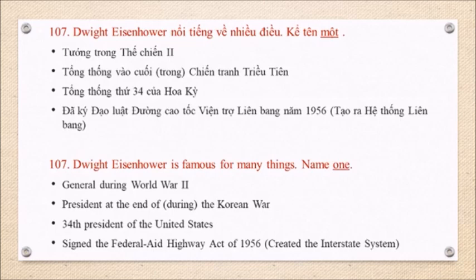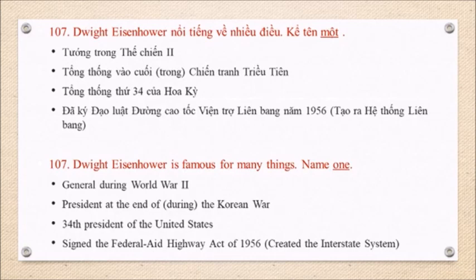Question 107: Dwight Eisenhower is famous for many things. Name one. General during World War II. President during the Korean War. 34th President of the United States. Signed the Federal Aid Highway Act of 1956. Created the interstate highway system.